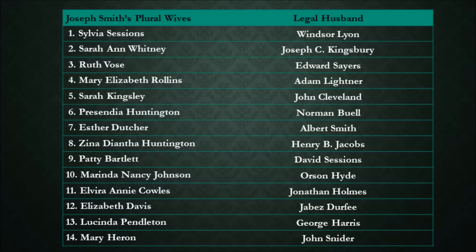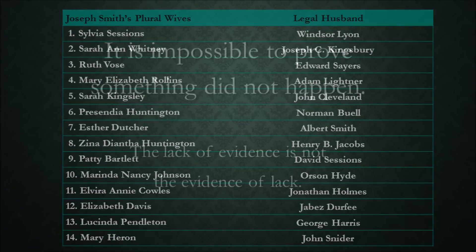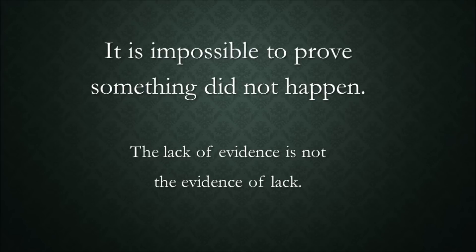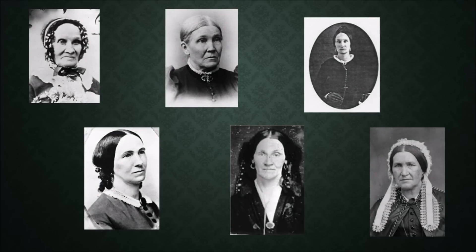But the author of the CES Letter does not investigate any of them. Perhaps the strongest supportive evidence for polyandry is that it is impossible to prove something did not happen — the lack of evidence is not evidence of lack. So while we will examine the evidence in this video, there is no way to prove polyandry did not occur. Polyandry would have been foreign to the women involved, who were devout Christians and would have had no context for the practice or how it might have been morally acceptable.